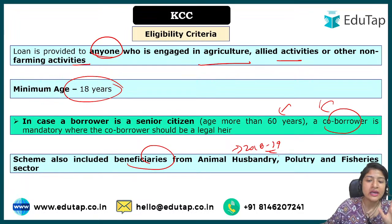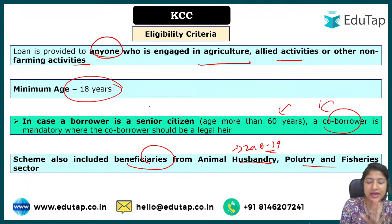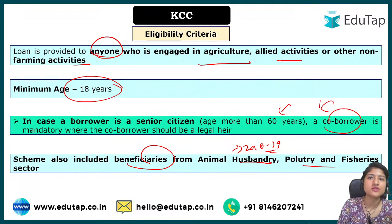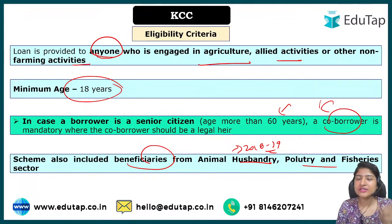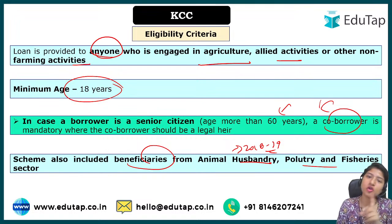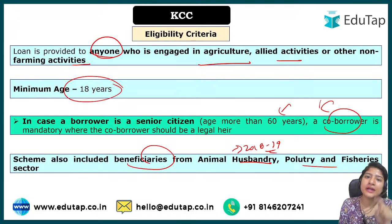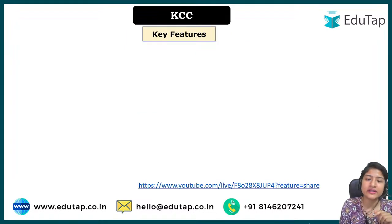Since financial year 2018-19, the animal husbandry, poultry, and fishery sectors have also been included in the KCC scheme. The card is valid for five years, but it must be renewed annually — documentation is done only once, but the annual review is mandatory.